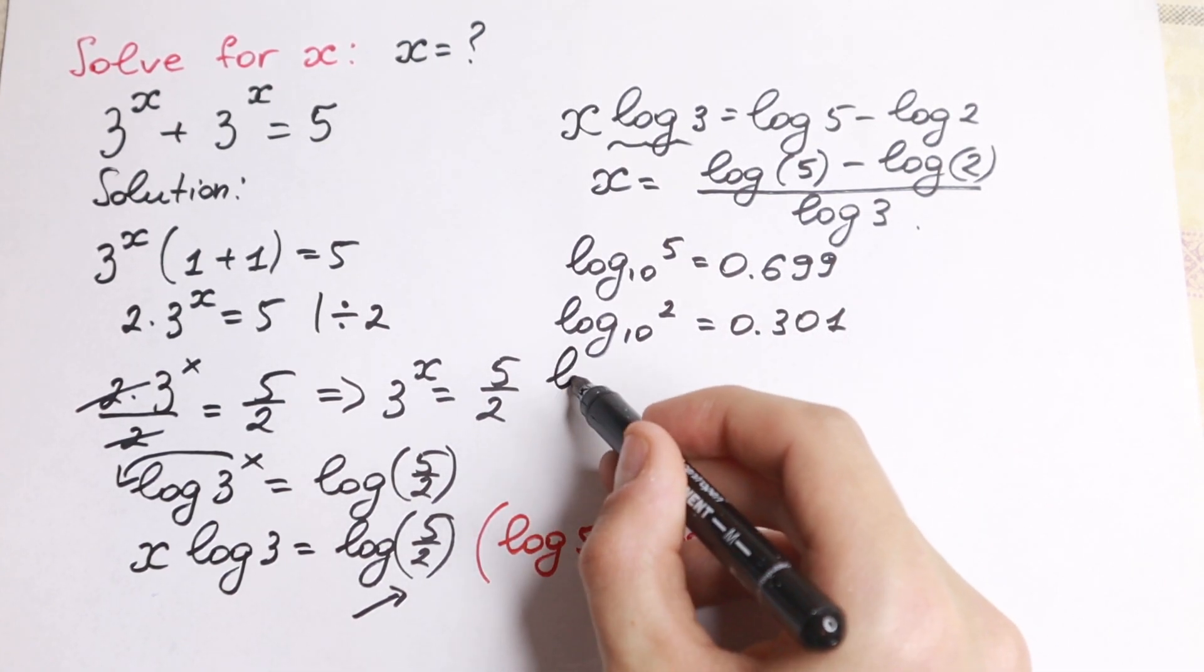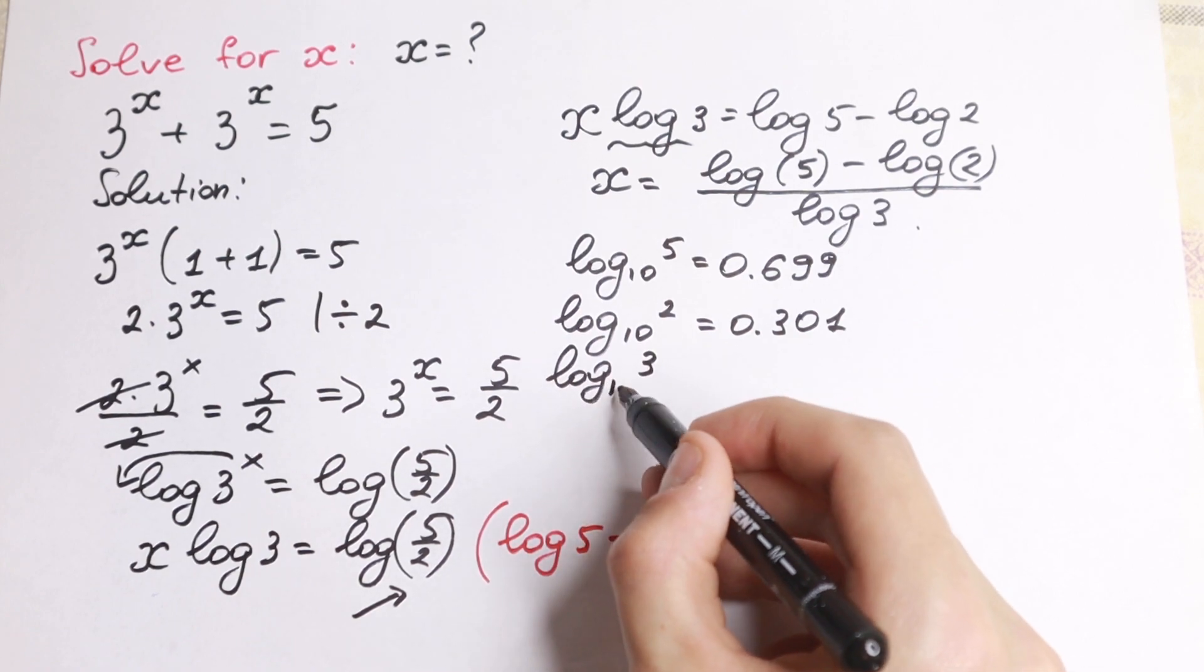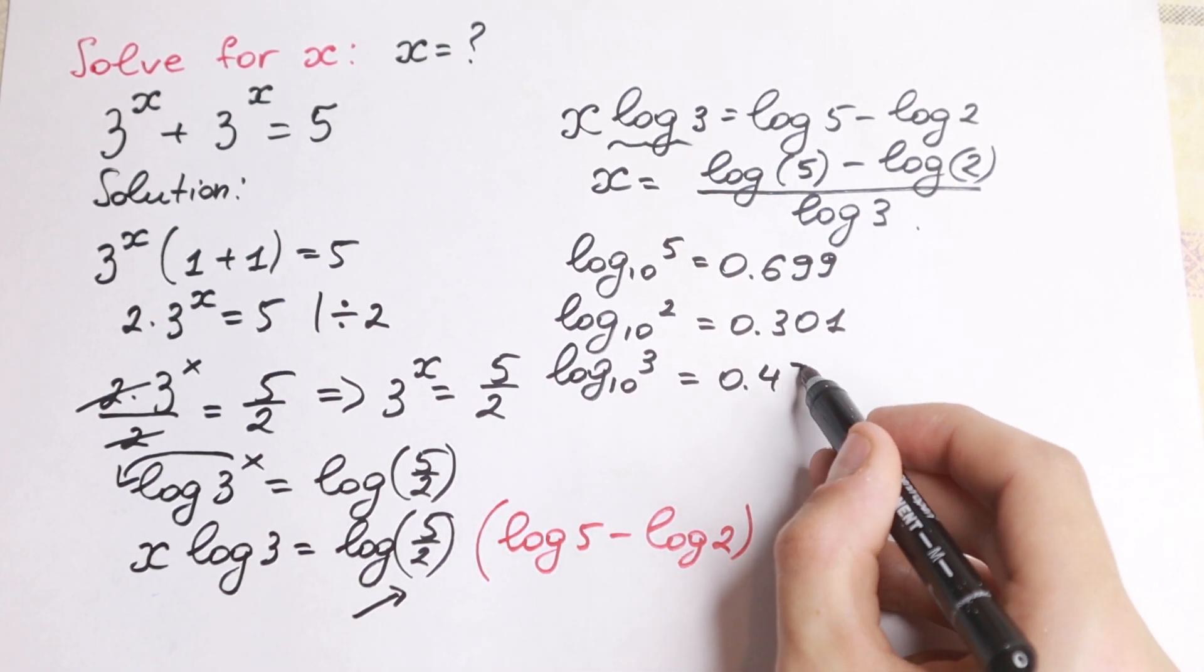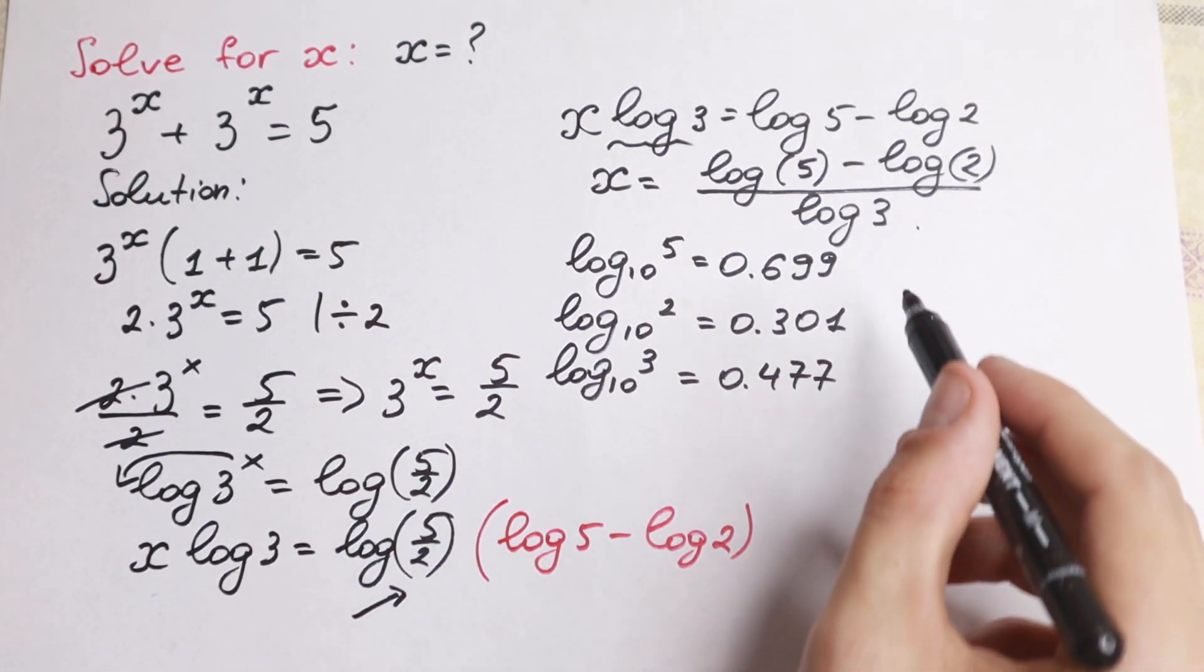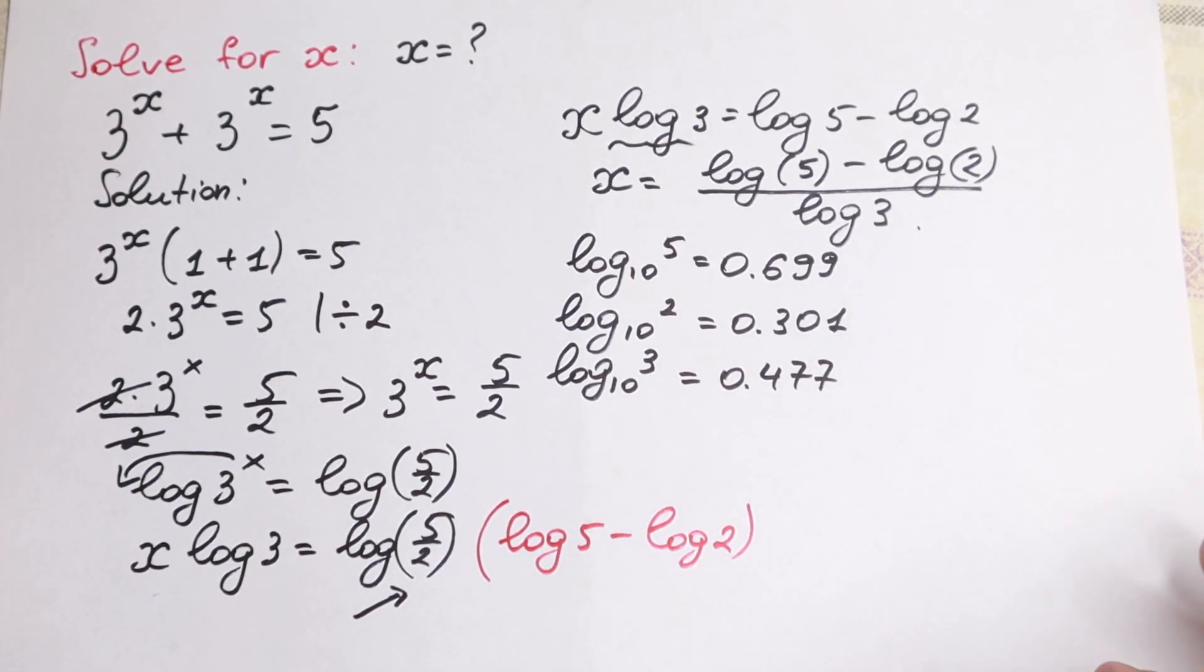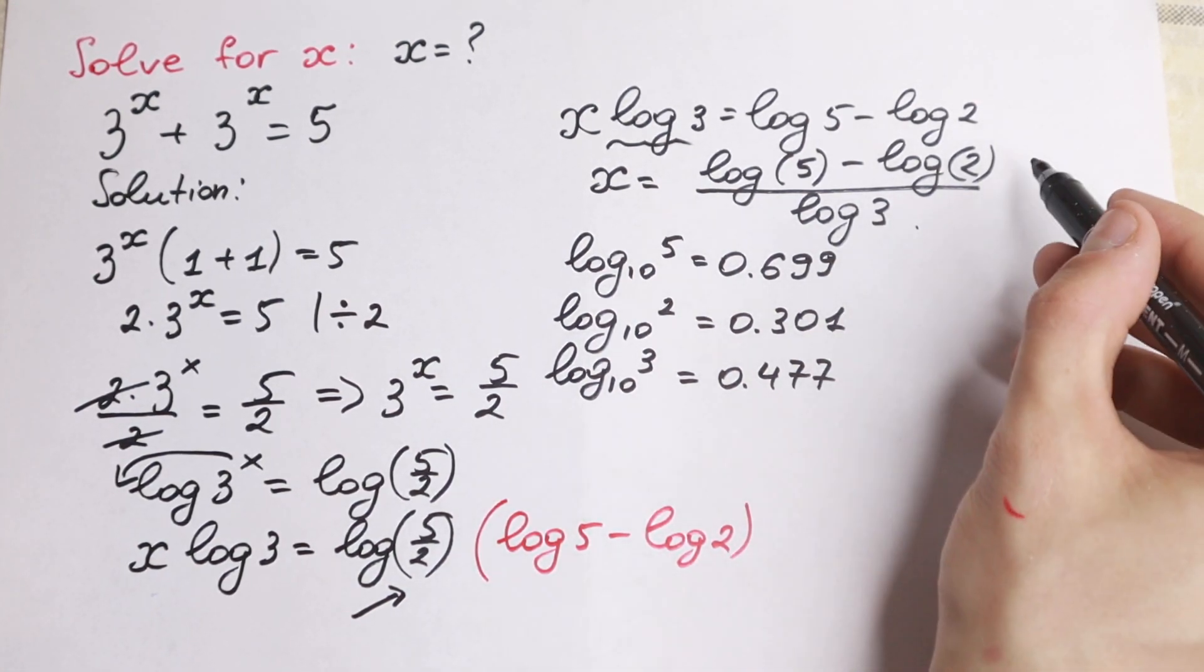And log 3 base 10, we will have 0.477. So these are approximate values to this answer.